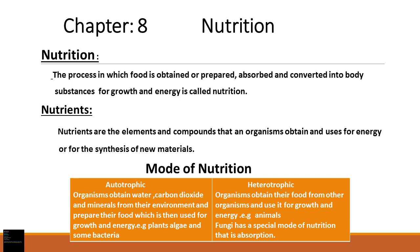The question is how organisms get these nutrients. There are two modes of nutrition by which organisms get nutrients: autotrophic and heterotrophic. In autotrophic mode of nutrition, organisms obtain water, carbon dioxide, and minerals from their environment and prepare their own food, which is then used for growth and energy. Examples include plants, algae, and some bacteria.